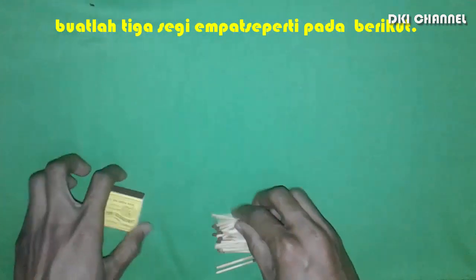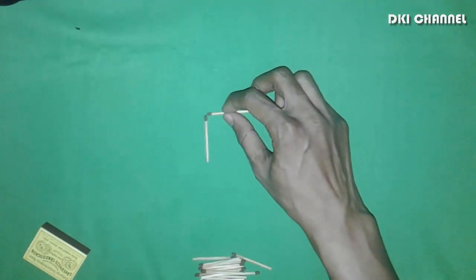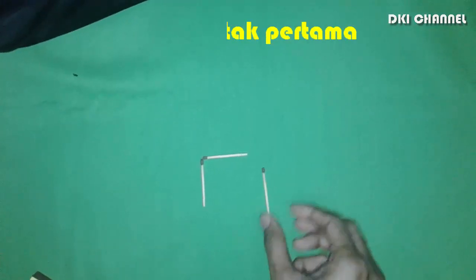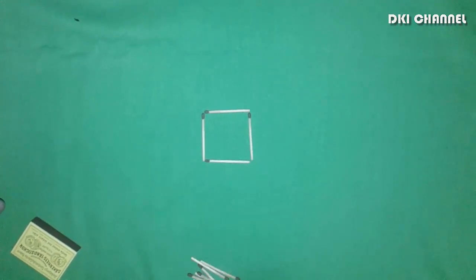Oke, kita keluarin dulu. Kita akan buat awal, yaitu kotak. Kita akan membuat kotak, kotak yang sederhana.